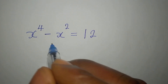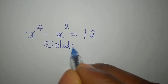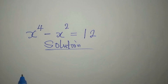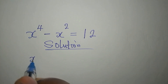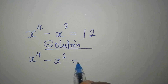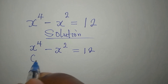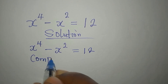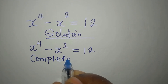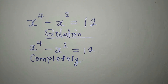Hello everyone. Let's provide the solution to this problem: x to the power of 4 minus x to the power of 2 equals 12. And we have to solve this completely.